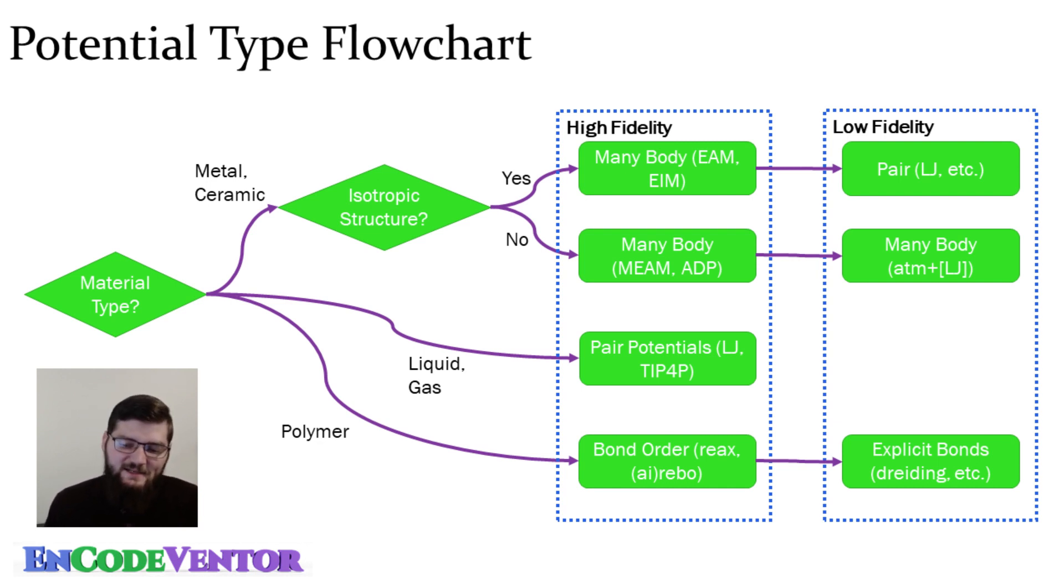Now, you go back to the beginning and you're actually modeling like liquid or a gas, then you can usually use pair potentials. Those could be Leonard Jones potentials or if you're modeling water, then there's TIP potentials and there's a bunch of other potentials for water as well. But typically, if you're looking at liquids or gases, because there's no long range structure, you can get away with pair potentials.